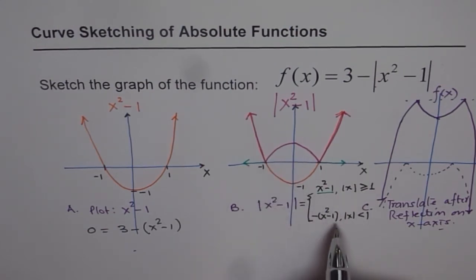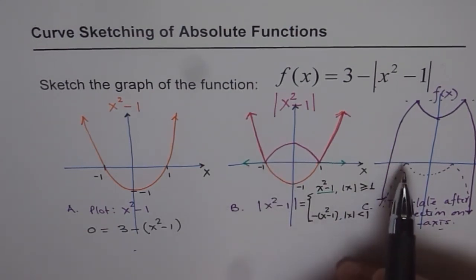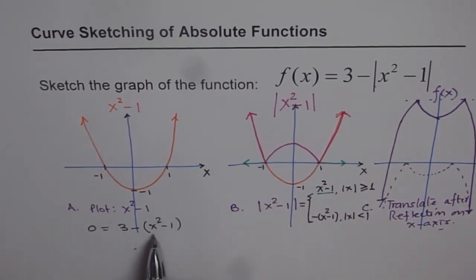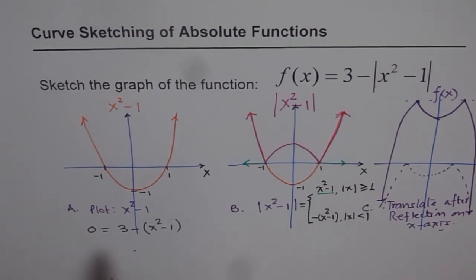Since we know that these x-intercepts are beyond plus and minus 1, we are taking the value minus of x squared minus 1. Do you get the idea? So when you open this bracket, what do you get?